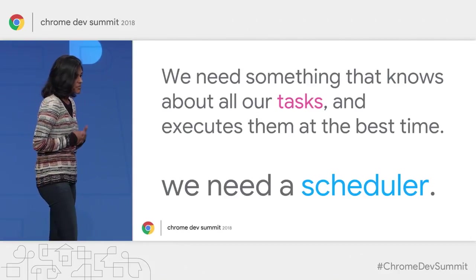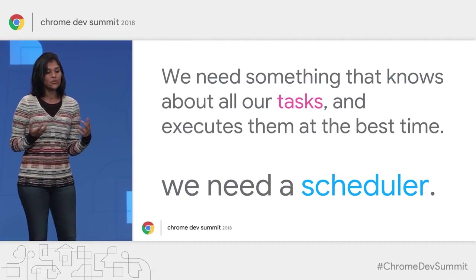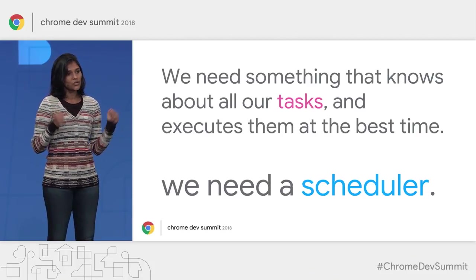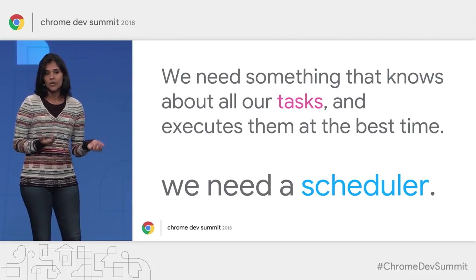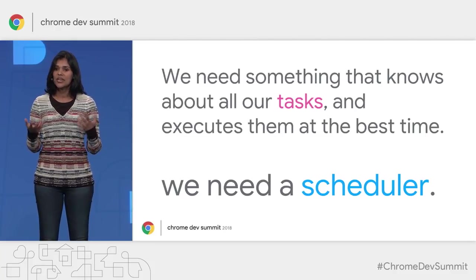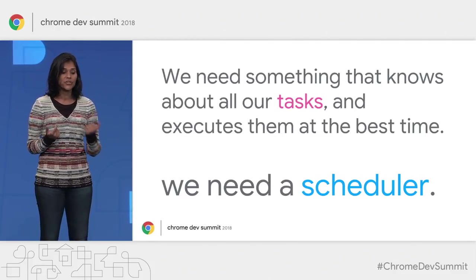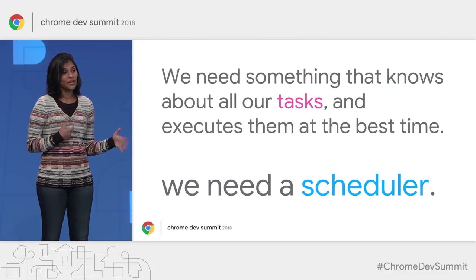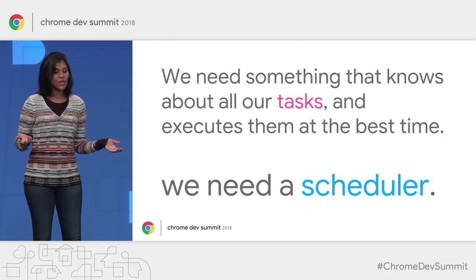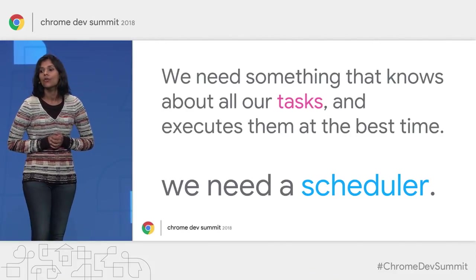What we need is a way to provide our chunks of work — our tasks — to a system that can hold them in a task queue, and then make good decisions about when to take tasks out of the queue and execute them at an appropriate time based on everything going on. This is the definition of a scheduler.